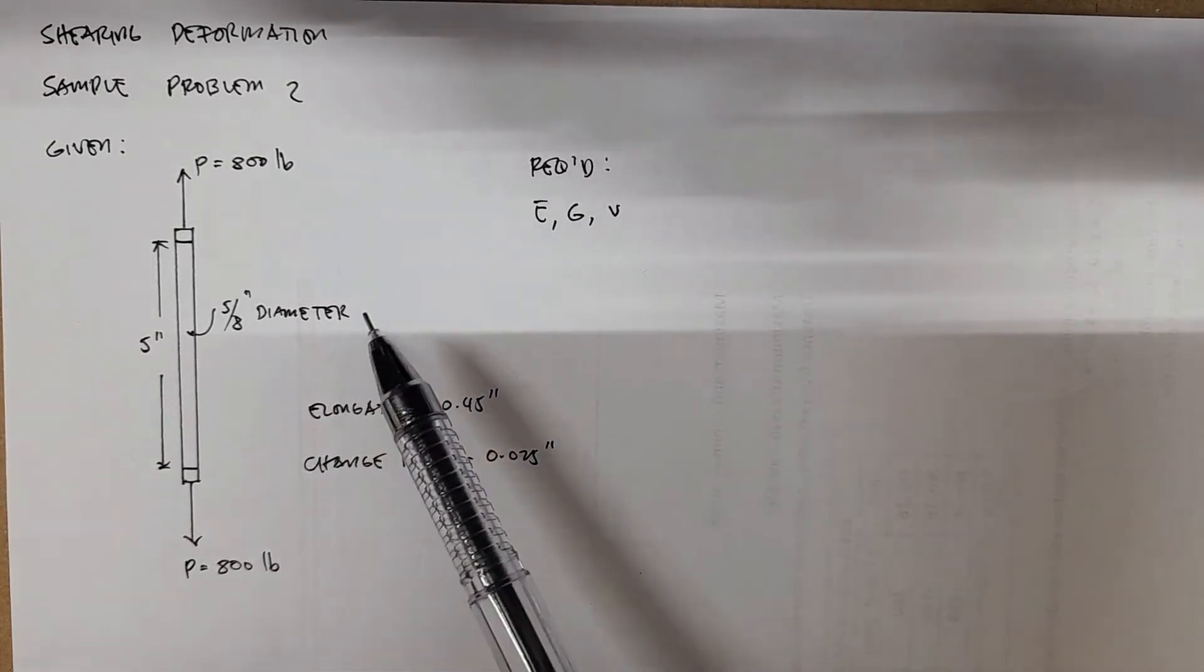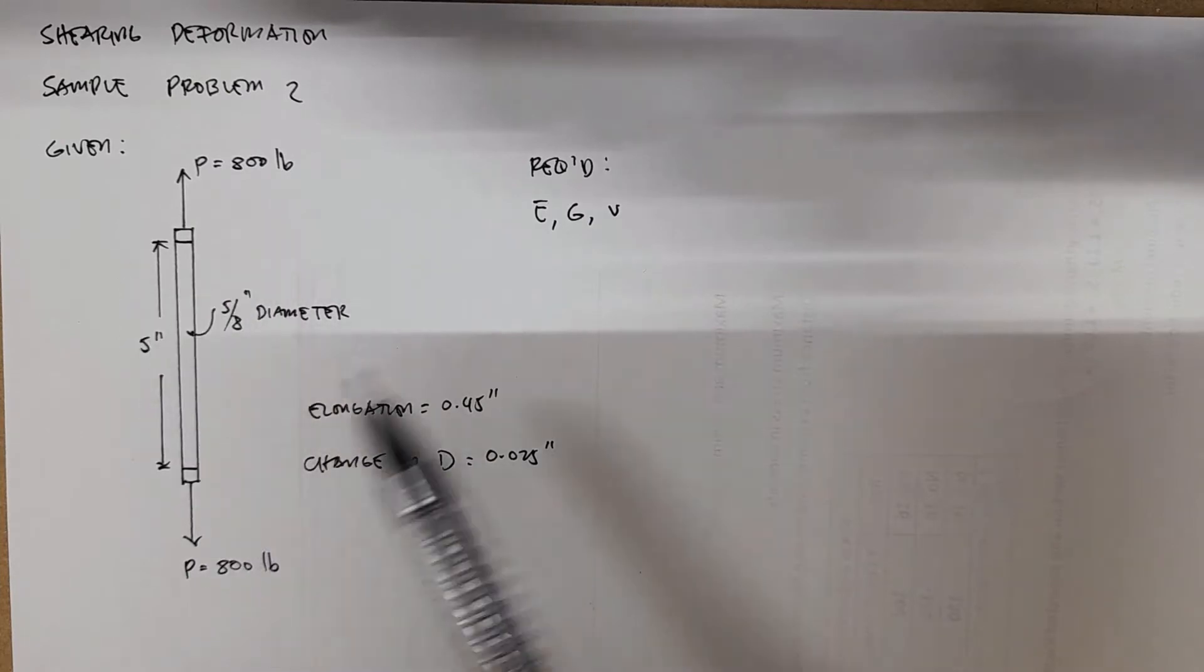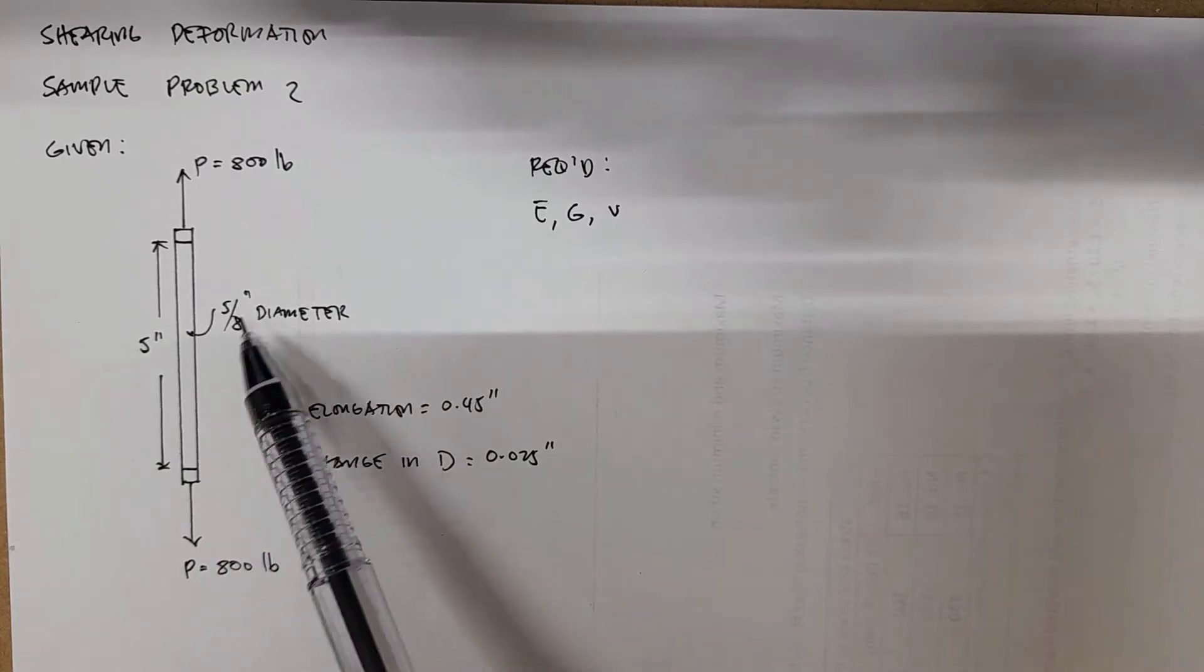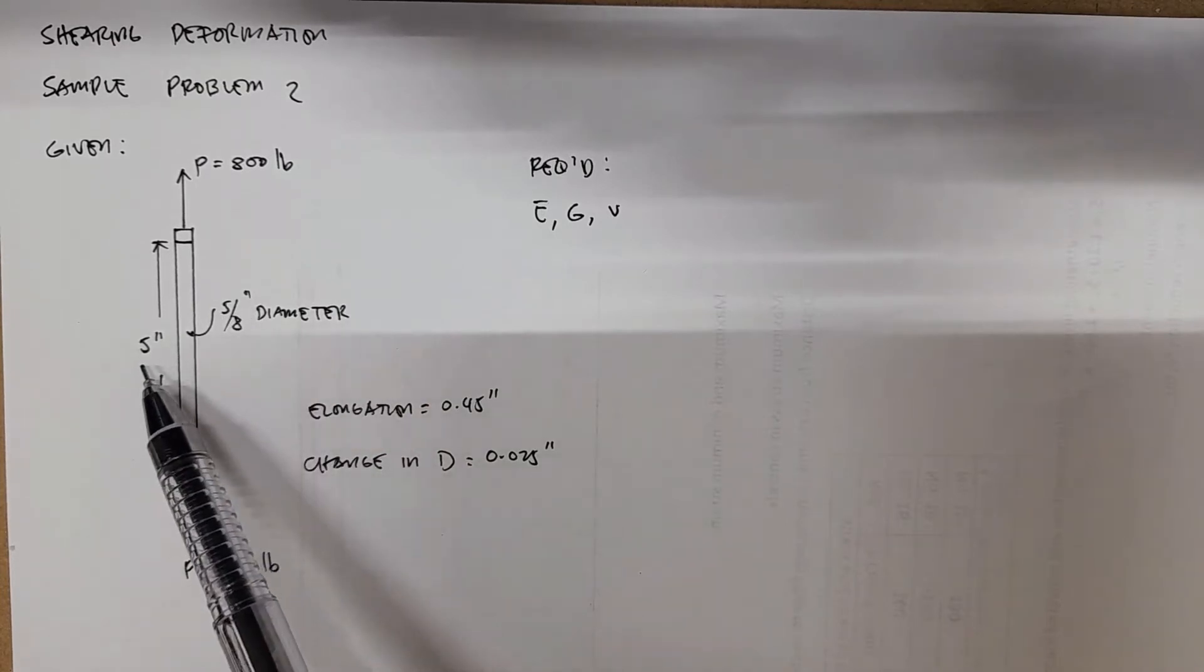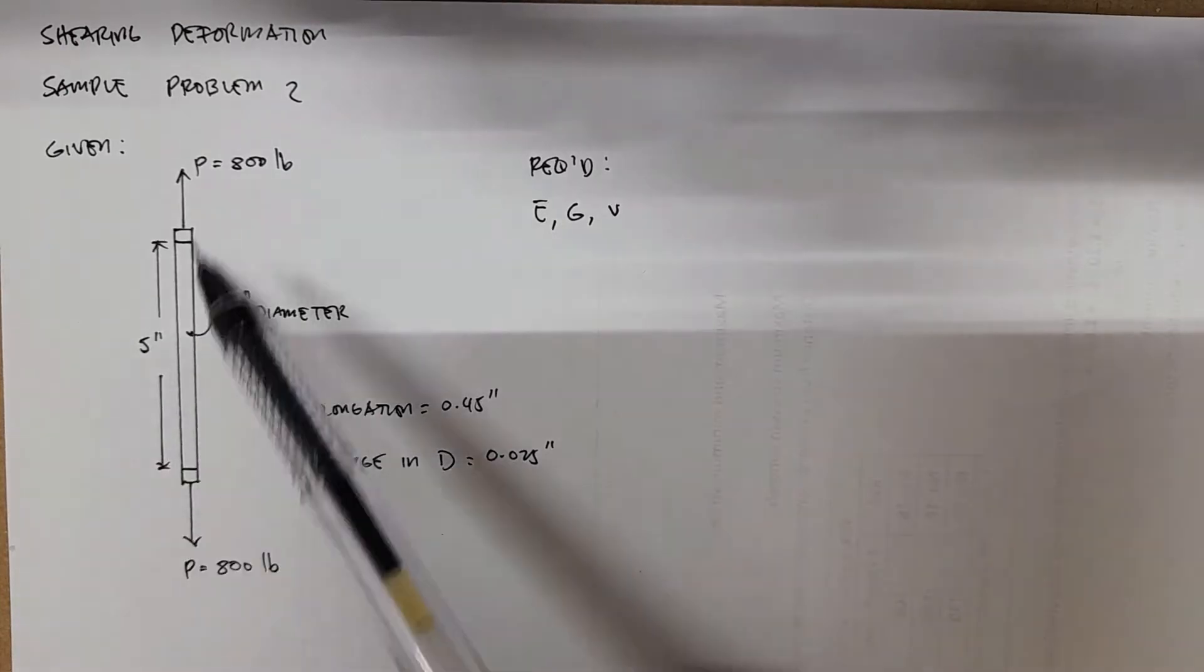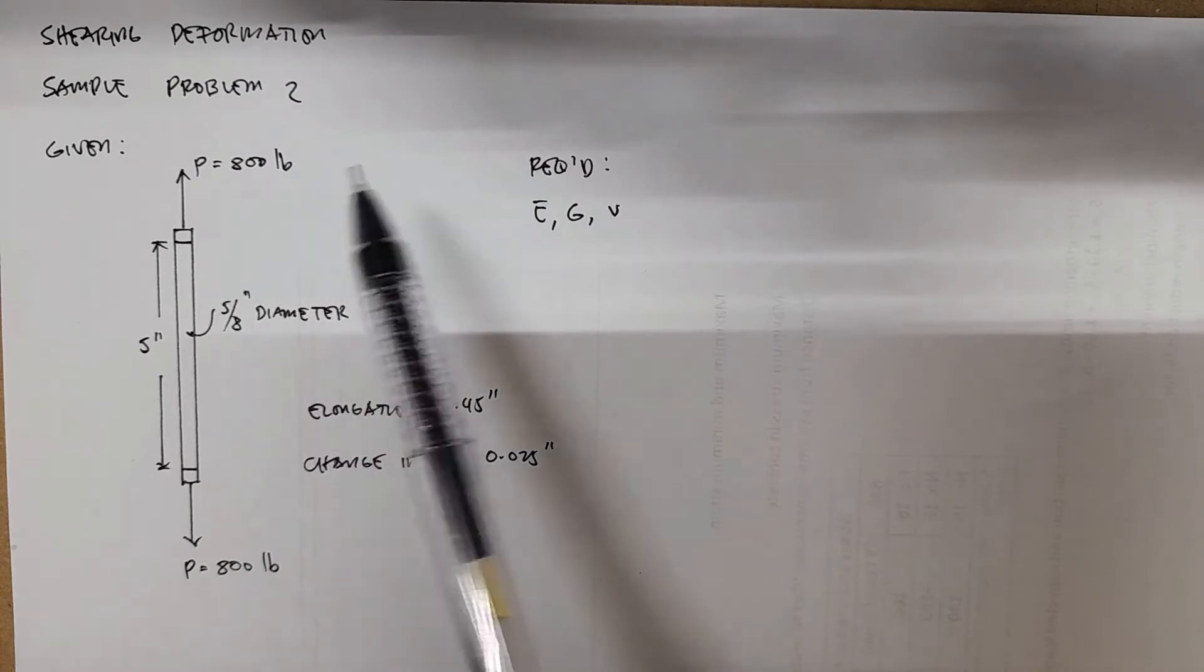Given details: we have a cylindrical solid rod which is in a test experiment. We have the dimensions of the diameter, five-eighths inches, and the length is five inches, with a load of tensile forces of 800 pounds.